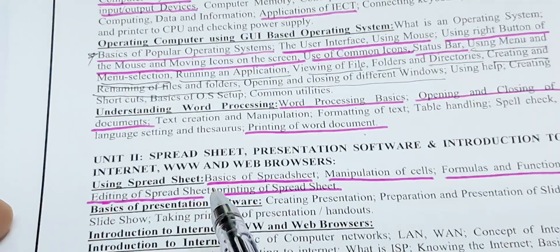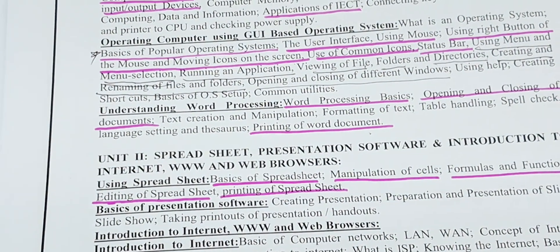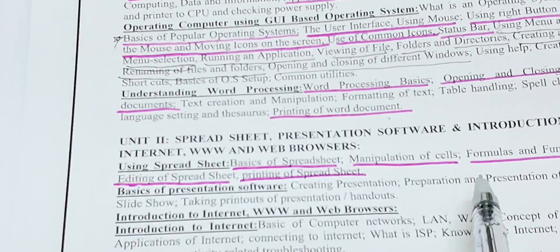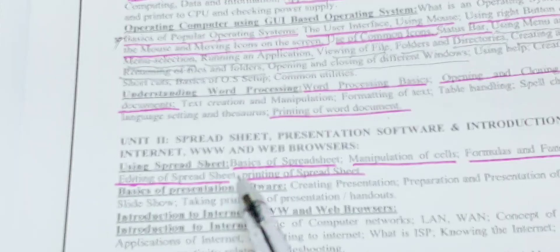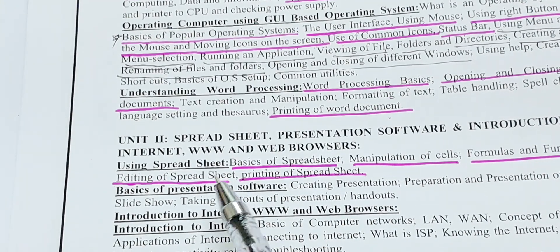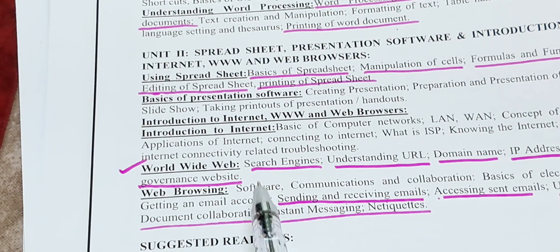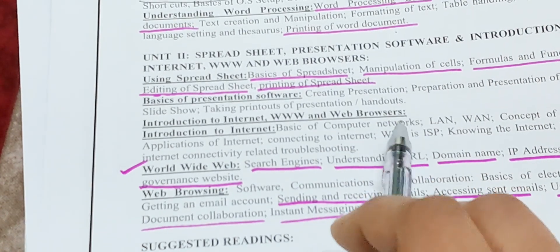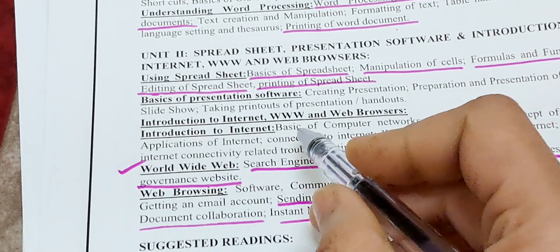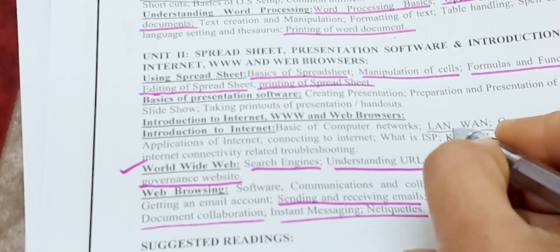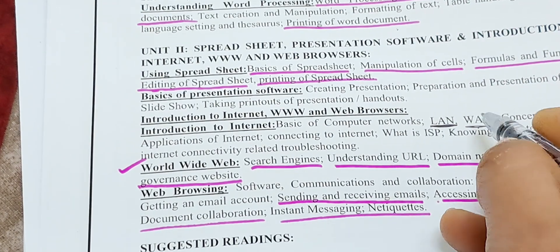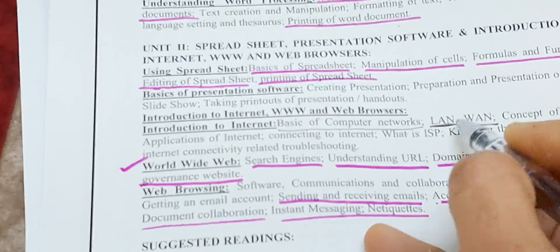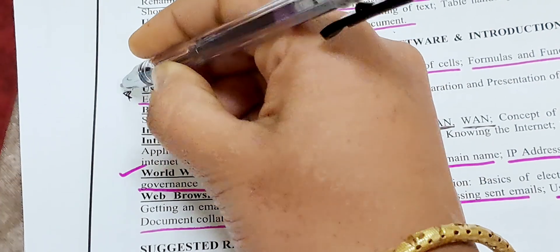In Unit 2 we have: spreadsheet, presentation software, and introduction to internet — WWW and web browser. Basics of spreadsheet is important, then manipulation of cells, formulas and functions, editing of spreadsheet, and printing of spreadsheet. For computer networking, learn WAN and LAN for short answers — basics of computer network is quite important and sometimes they will ask about it.